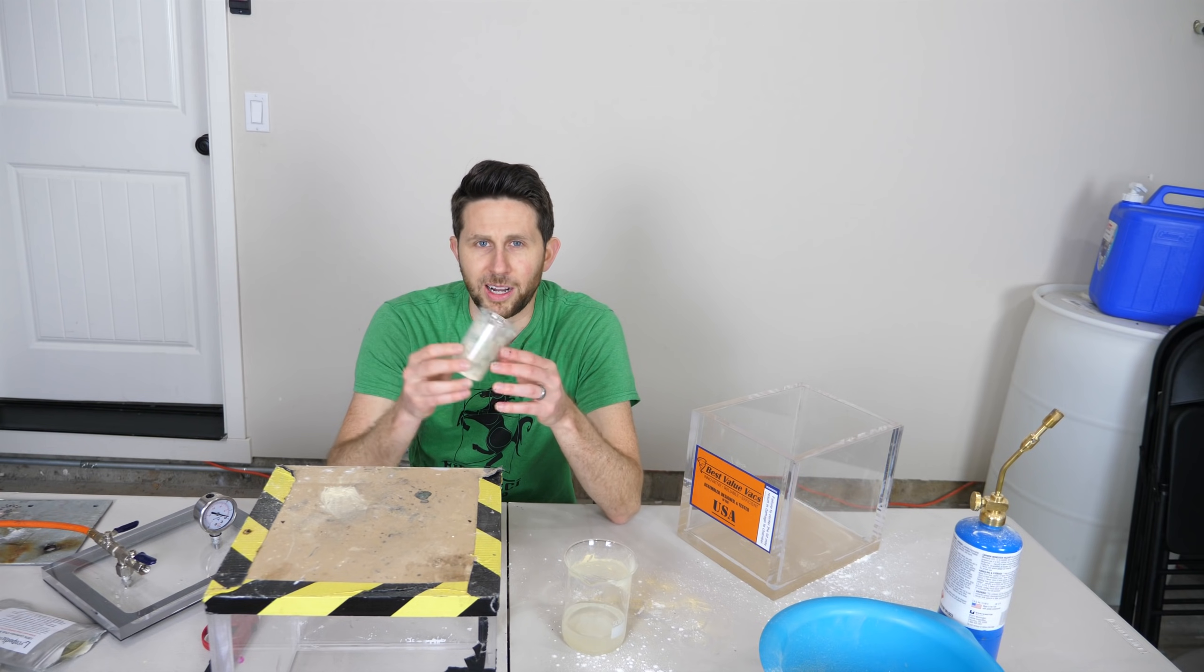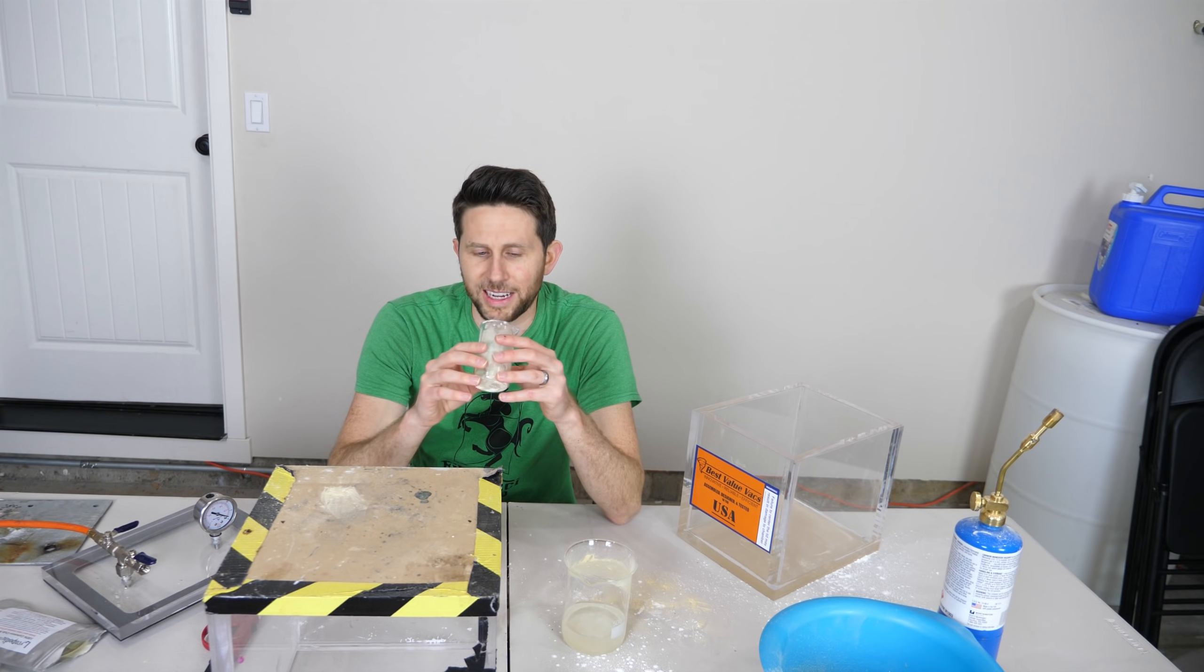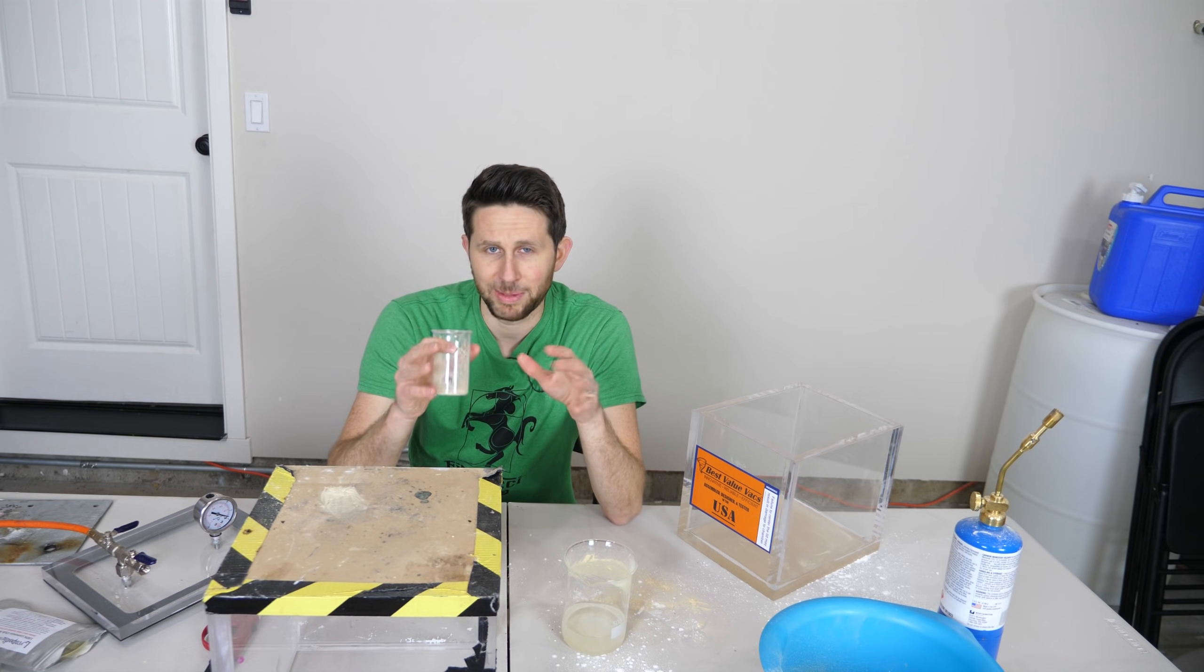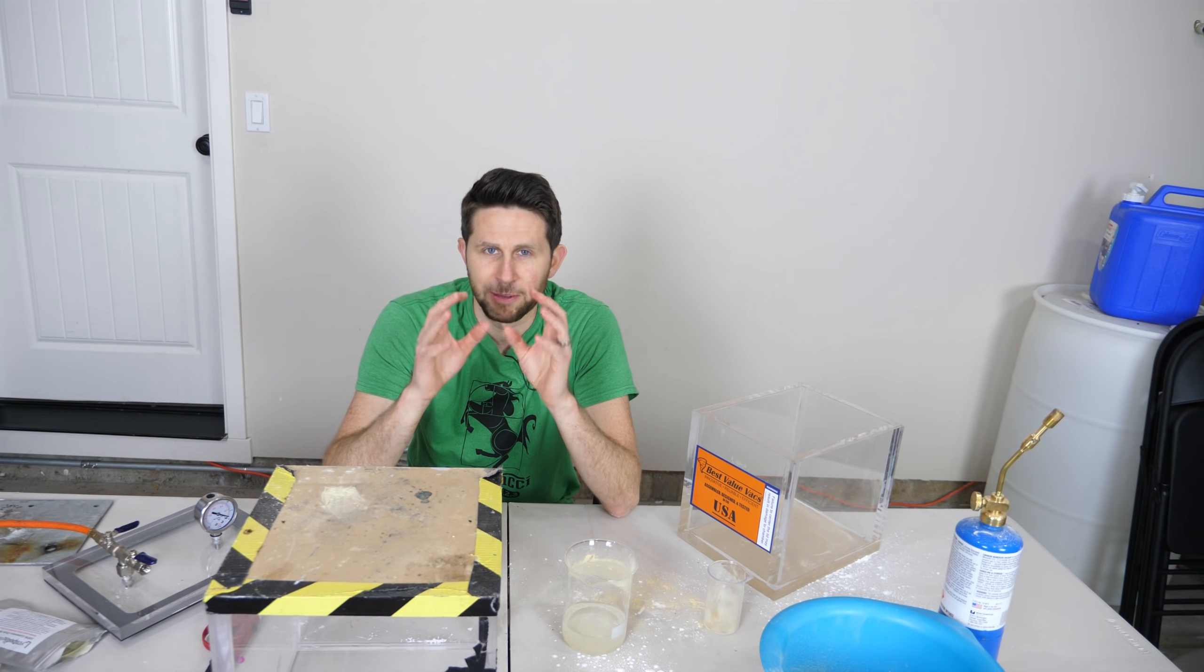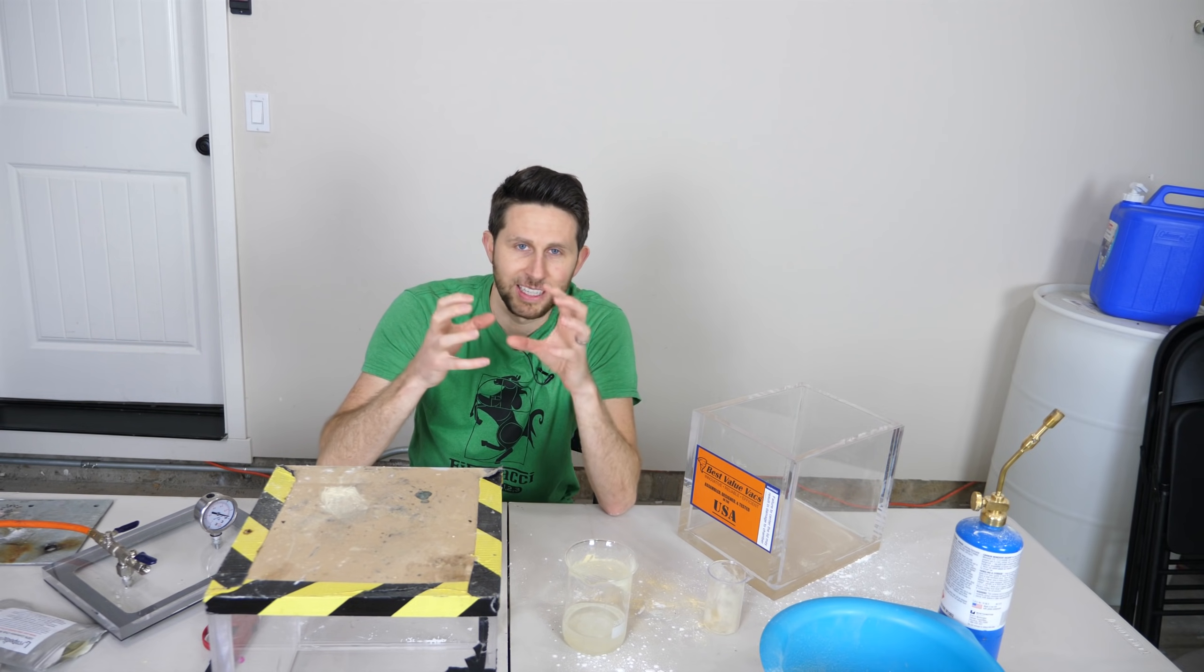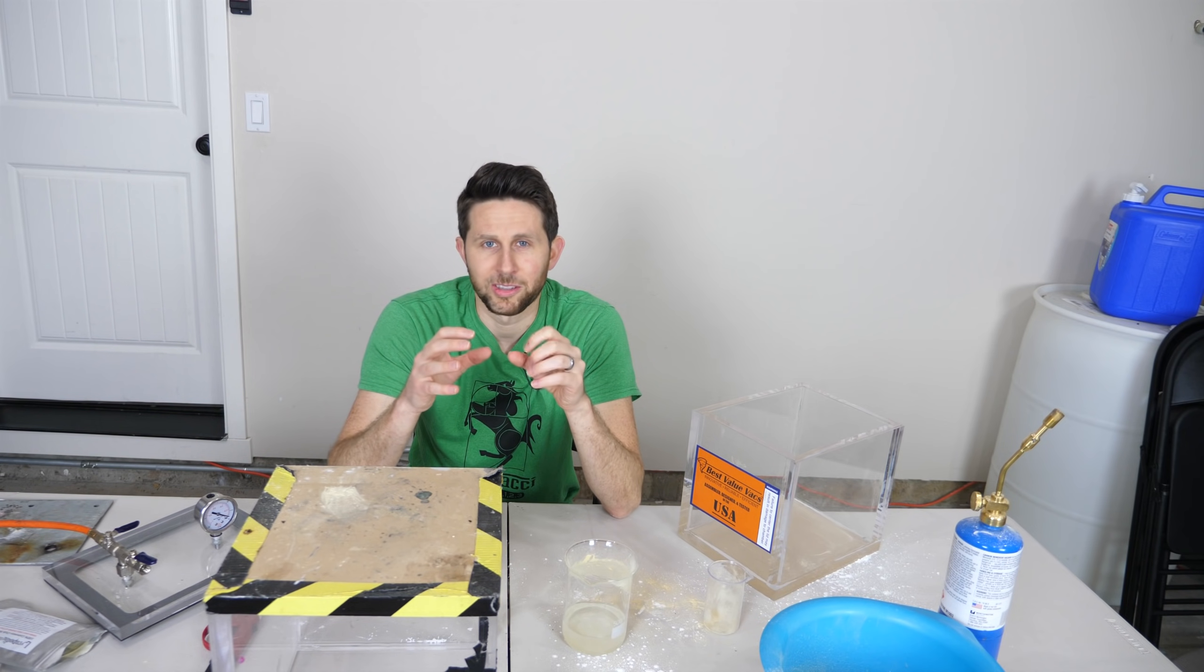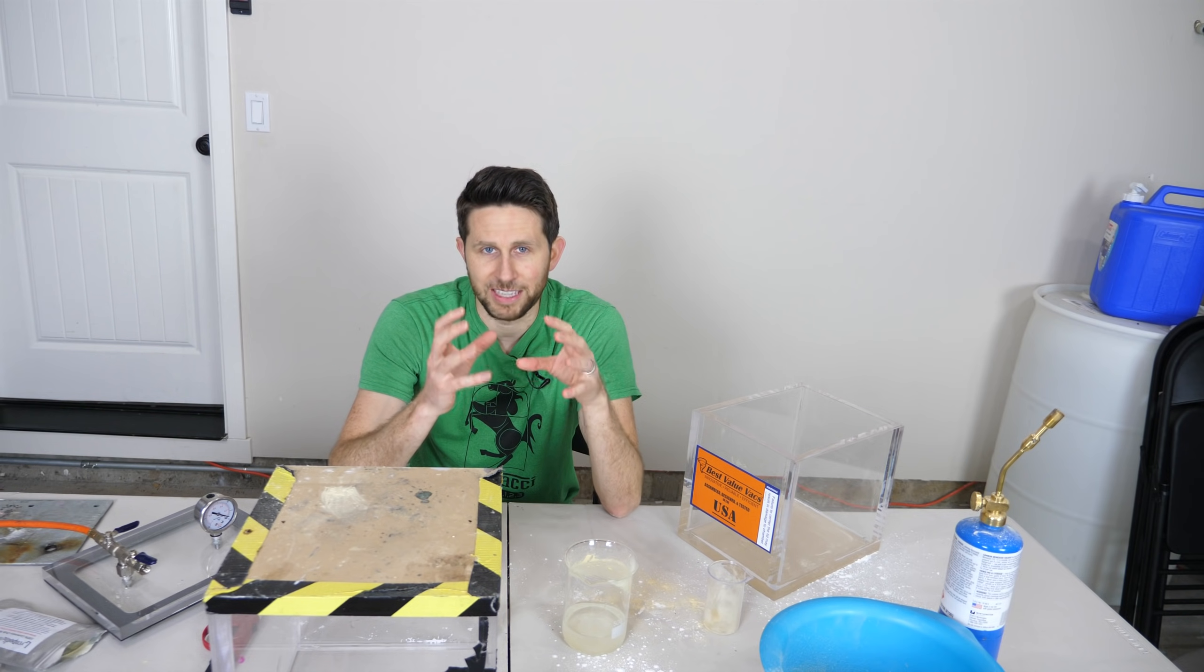Now this lycopodium is so small. Each individual granule is around 30 microns in diameter. And when you have something that small, what's interesting is you can actually start to see Brownian motion. Now let me explain what Brownian motion is if you're not familiar with it. So we know that everything around us is made up of atoms. And those atoms and molecules are constantly jiggling and moving around. If they have a temperature above absolute zero, they're always moving.